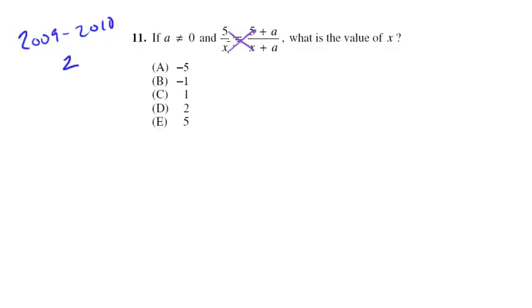So let's go ahead and cross multiply. We're going to get 5x + 5a equals - next one - 5x + xa.